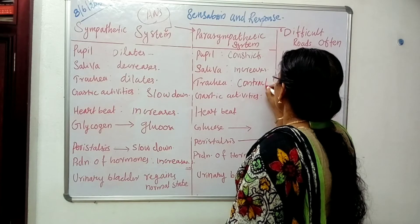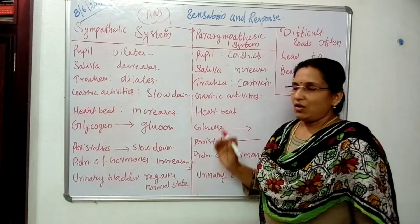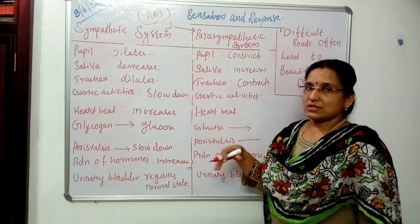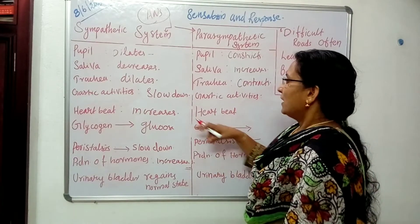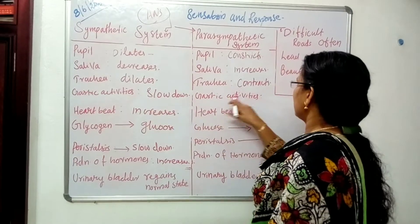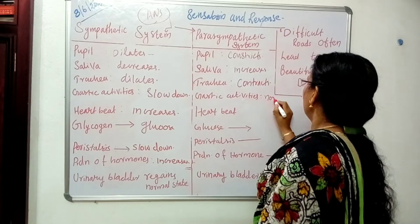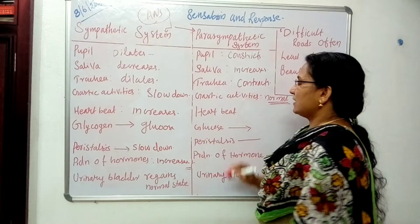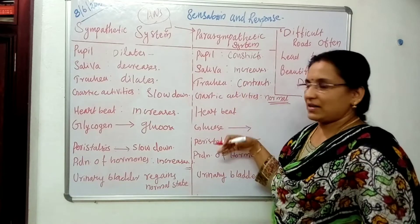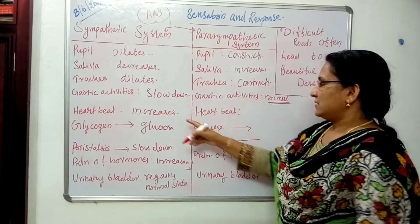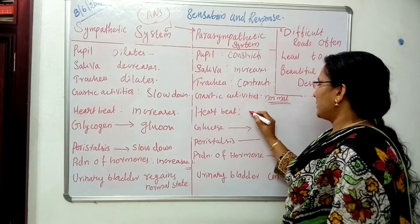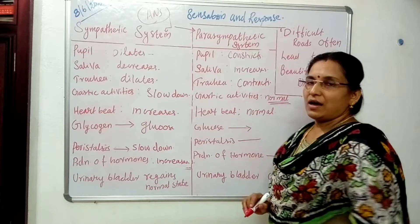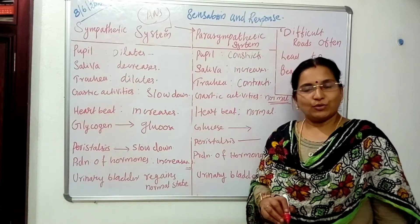All organs come back to their normal state. Gastric activities become normal so that we feel hunger in normal conditions. Heartbeat, which increases during the sympathetic system, becomes normal — the normal heartbeat is 72 times per minute.